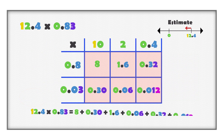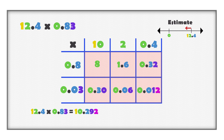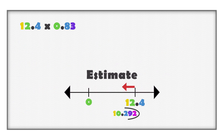Add all the values together to determine the total product of twelve and four tenths multiplied with eighty-three hundredths. Remember, when adding decimal values, it is important to add together digits of the same place value. Twelve and four tenths multiplied with eighty-three hundredths is ten and two hundred ninety-two thousandths. We estimated that the product would be less than twelve and four tenths. If the product is close to what we estimated, we can be confident about our work. Is ten and two hundred ninety-two thousandths less than twelve and four tenths?